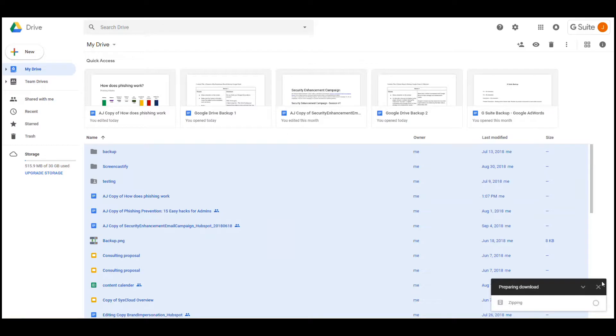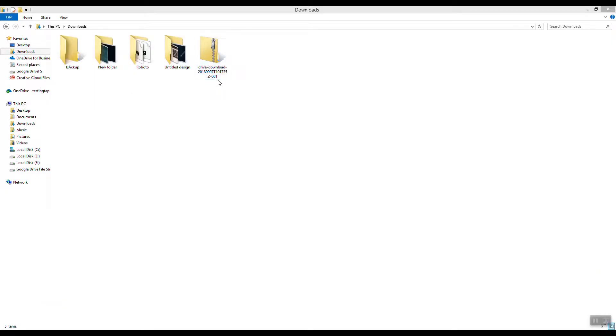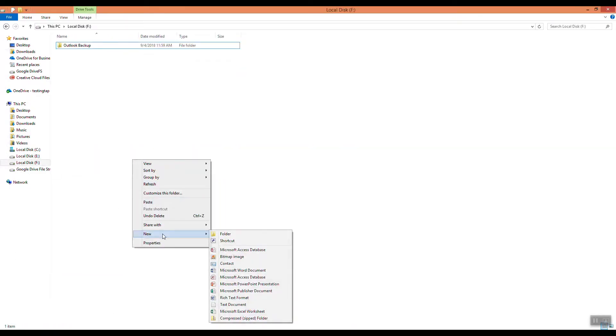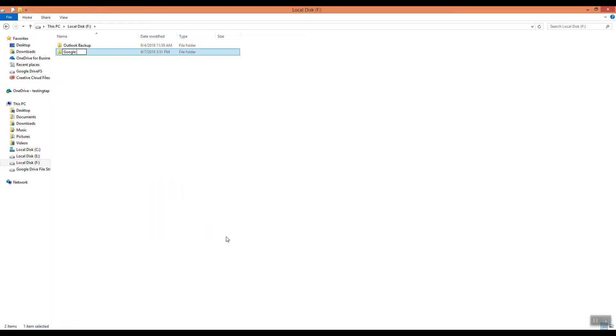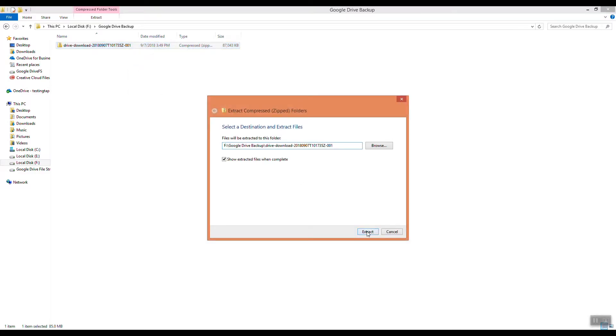Here is where you can see the download progress. The time taken to download the files will depend on the amount of data stored in your Drive. The downloaded files will be in a zip format. Store this copy in a safe location and extract them whenever needed. Follow the same steps to download the shared files on your Drive.